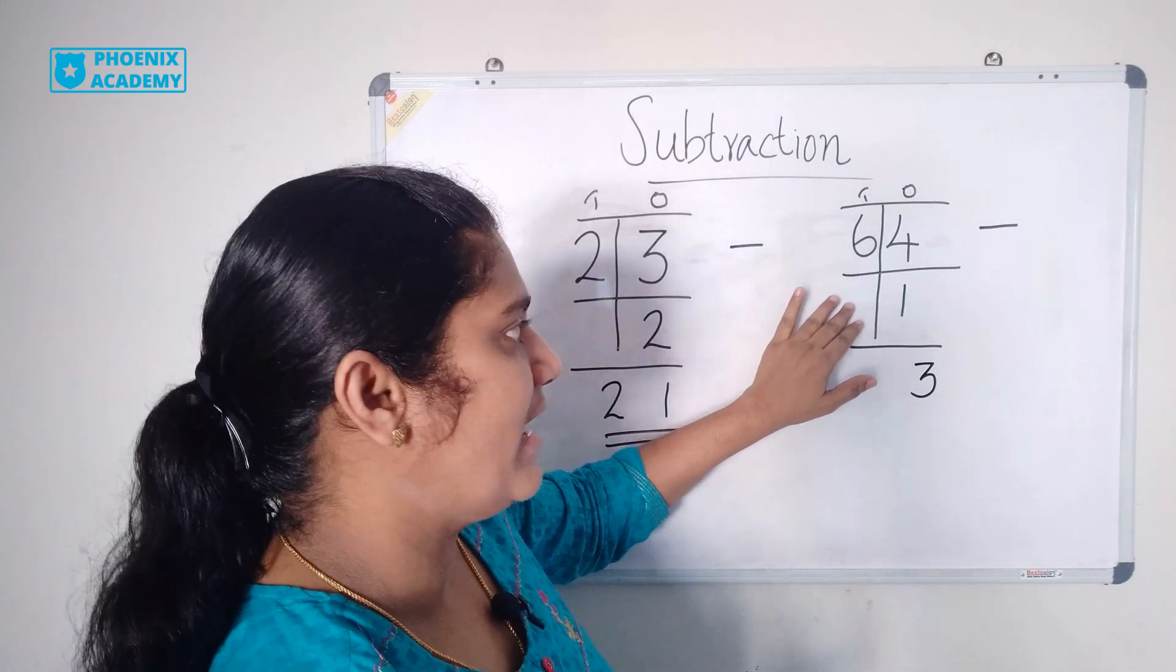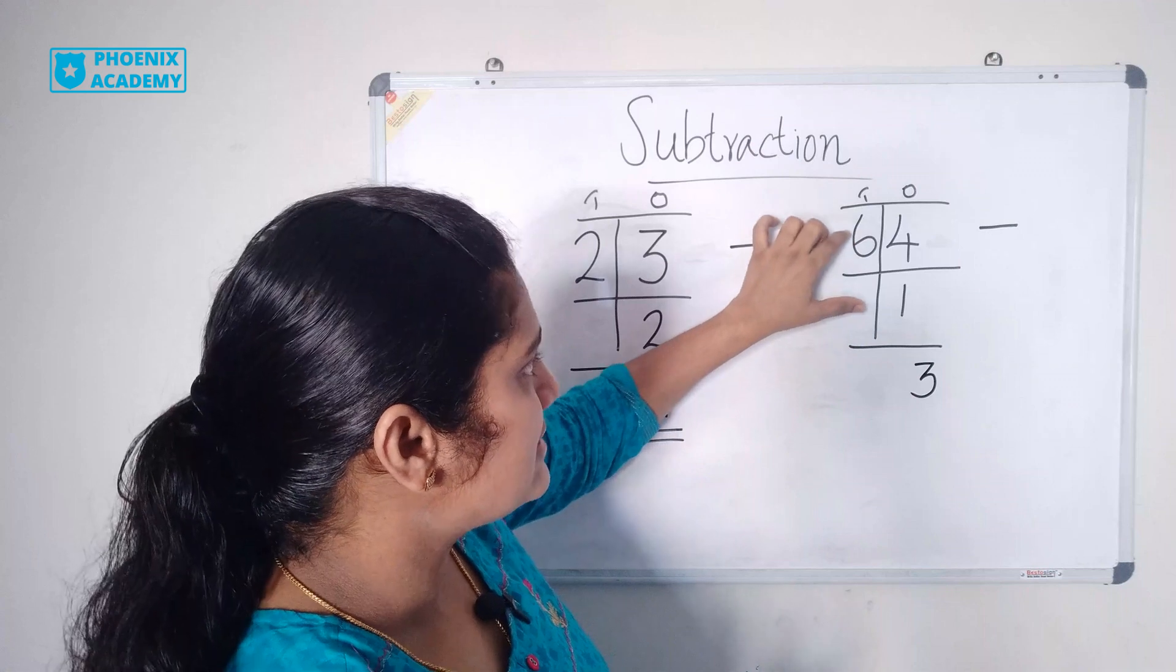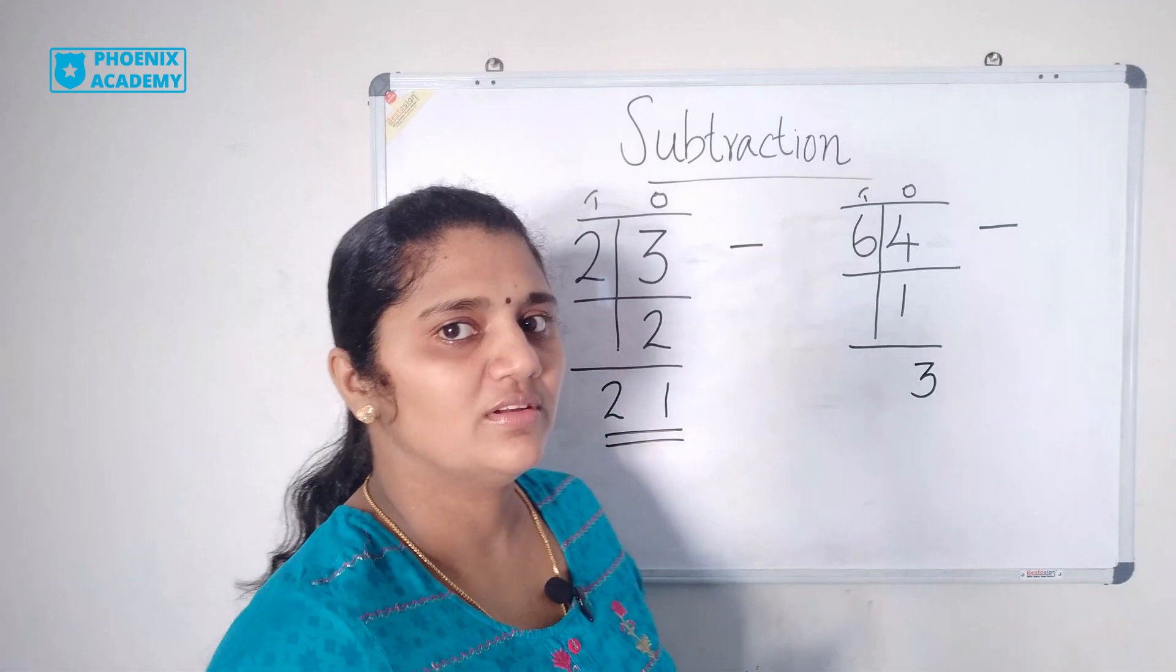We don't have any values in tens place. So 6 minus 0 is 6.